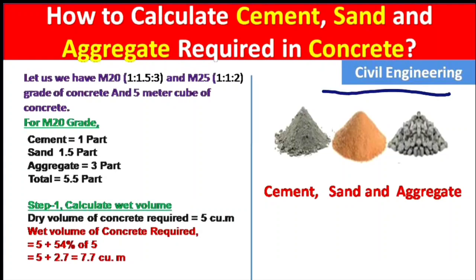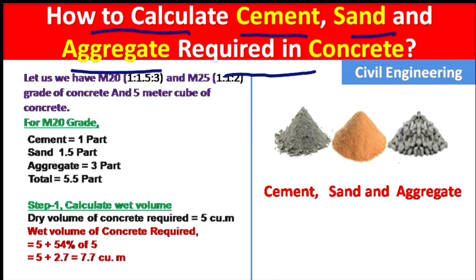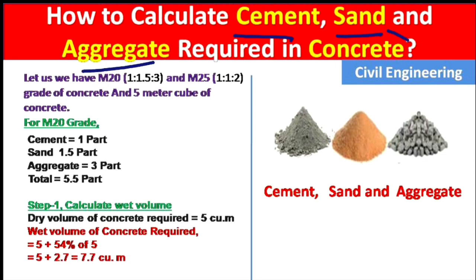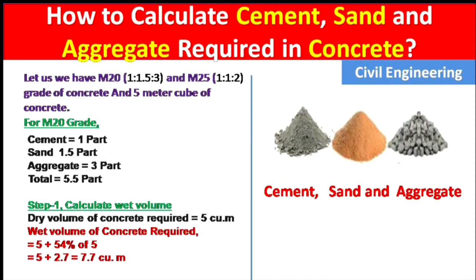Hello guys, welcome to Civil Engineering YouTube channel. In this video we will talk about how to calculate cement, sand and aggregate required in concrete. Many students were asking about how to calculate the cement, sand and aggregate in a required amount of concrete — it may be 10 cubic meters, 20 cubic meters, 5 cubic meters. Here I am taking 5 cubic meters of concrete.